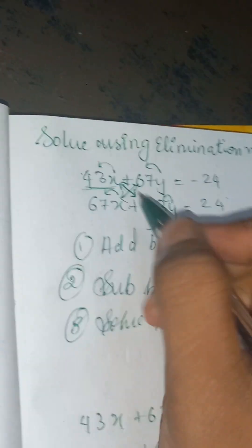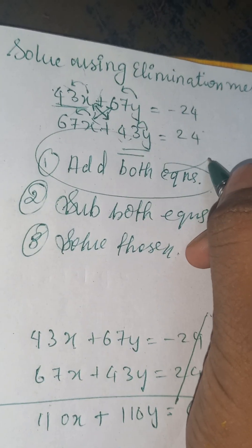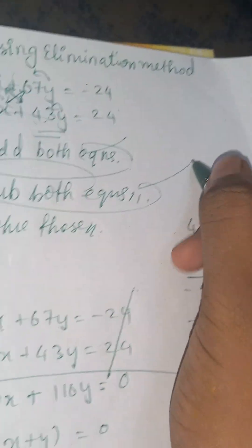Hope you understood the whole question. This is a very simple question. Whenever you get a question like this where the coefficients are interchanged, first add both equations, then subtract both equations, and then solve both equations. That's all. Thank you for watching this video.